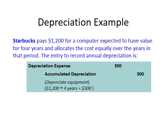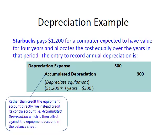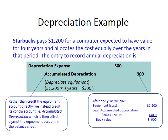Here's an example: Starbucks pays $1,200 for a computer with a useful life of four years. Allocating the cost equally, each year we depreciate by $300. The journal entry is: debit depreciation expense $300 and credit accumulated depreciation $300. By crediting the contra account rather than the asset account directly, we reduce the book value from $1,200 to $900.